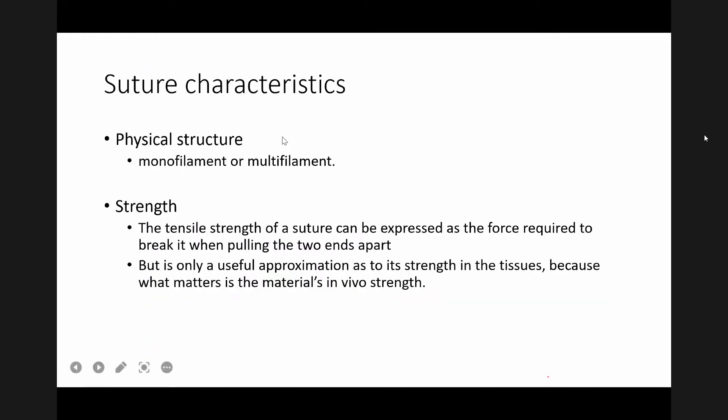There are five main characteristics of sutures we should know. The first is physical structure: it is either monofilament or multifilament. Monofilament means it is made of a single thread. In multifilament sutures, there are small tiny threads that are braided together with multiple filaments, rolled to make a desirable size.